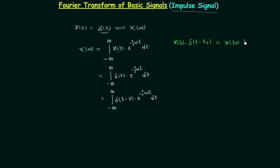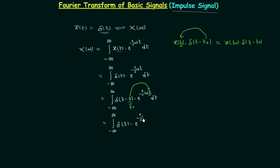Applying this property, t₀ is equal to 0, so 0 replaces t in the next step. We have the integral from minus infinity to infinity of δ(t) multiplied by e^(−jω·0). This gives us e^0, and e^0 is equal to 1.